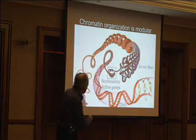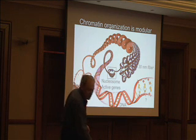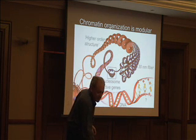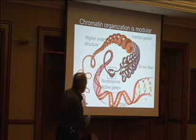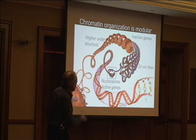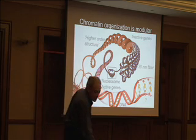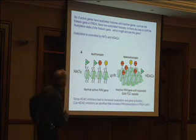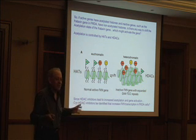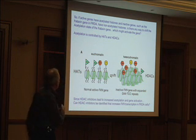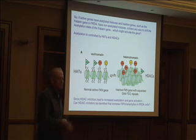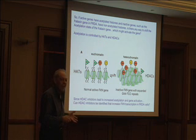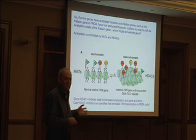Just strings of nucleosomes — beads on a string — represent active genes, and those higher order structures represent inactive genes modified by acetylation. How does acetylation take place? It's controlled by a group of enzymes called HATs, or histone acetyltransferases.